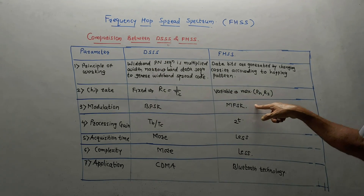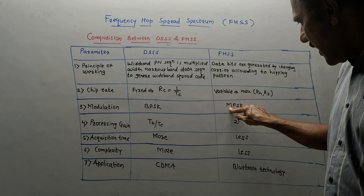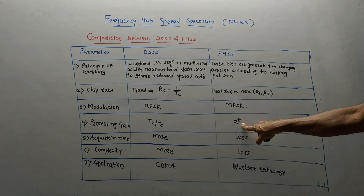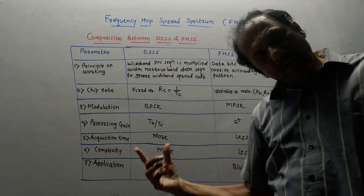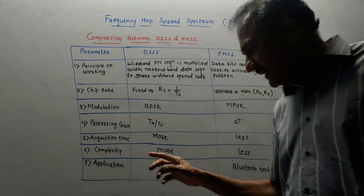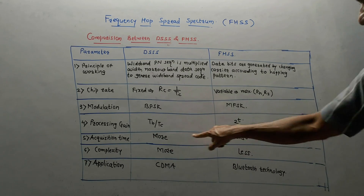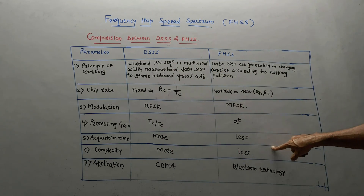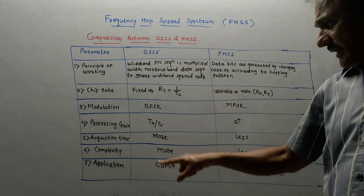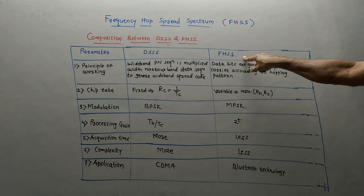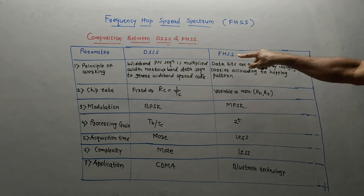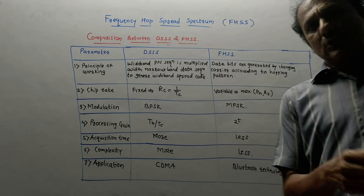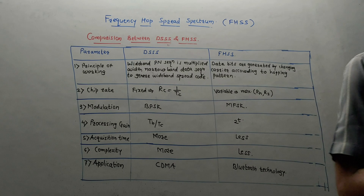The processing gain in DSSS is Tb/Tc, while in FHSS it is 2 raised to the power T, where T represents the number of bits generated by the PN sequence. Acquisition time is more in DSSS and less in FHSS. Complexity is more in DSSS compared to FHSS. Application of DSSS technology is CDMA — Code Division Multiple Access — whereas FHSS is used in Bluetooth technologies. That's it for today's session. Thank you for watching.